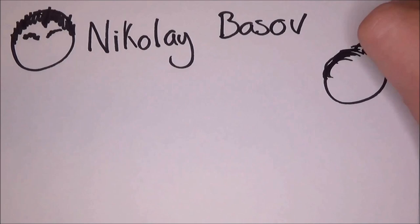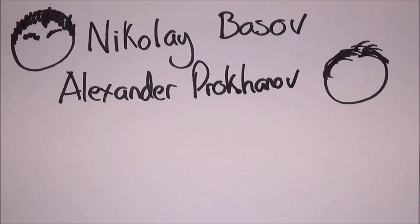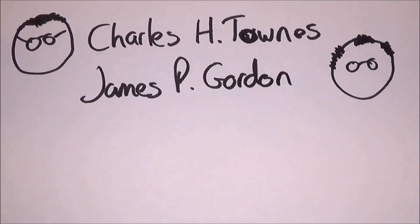Two men named Nikolay Basov and Alexander Prokhorov first described the theoretical principles of masers at an all-union conference of radio-spectroscopy in the USSR in 1952. As things are in science, there were also scientists working on masers independently yet simultaneously. Charles H. Townes, James P. Gordon, and H. J. Zeiger